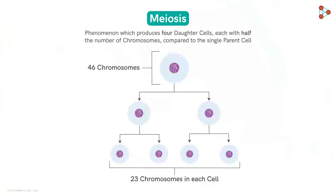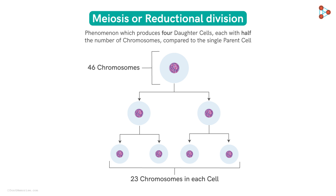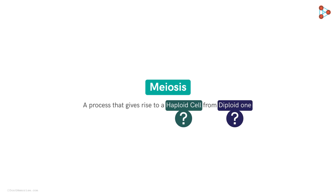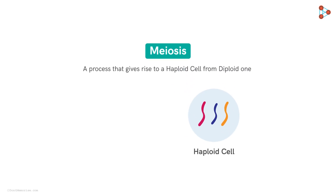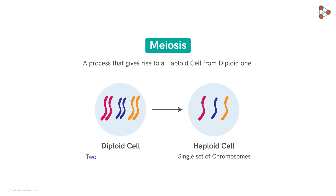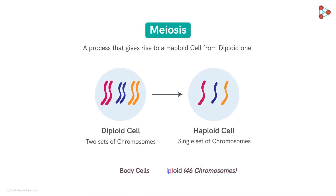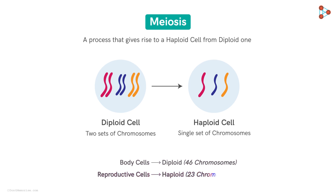Now since the process yields cells with half the chromosome number, it's also called reductional division. Meiosis is a process that gives rise to a haploid cell from the diploid one. A haploid cell is the one that has a single set of chromosomes, while a diploid cell has two sets of chromosomes. That means a diploid cell has chromosomes in double doses, while a haploid cell has chromosomes in a single dose. So the cells in our body with 46 chromosomes are all diploid, while the reproductive cells are haploid with 23 chromosomes.